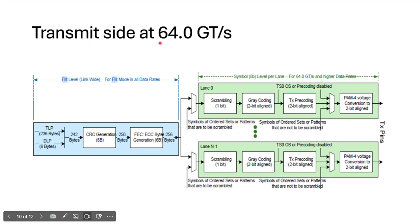This is the transmit side of the Gen 6 architecture. CRC generation passes the data to the Forward Error Correction generation block. The output of the FEC block is given to the input of the scrambler. The scrambler output passes to gray coding. Gray coding output passes to pre-coding. Finally, the data passes to Pulse Amplitude Modulation (PAM4).